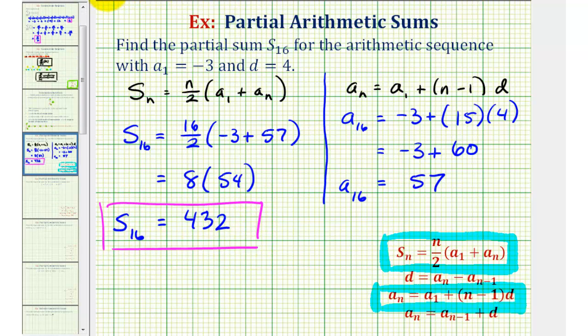But before we go, I do want to explain why this product here gives us the partial sum. So let's generate some terms in this series. We know it's arithmetic, and we know the first term is negative three. So we would have negative three plus,